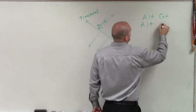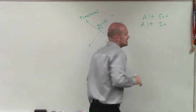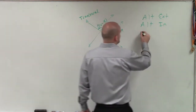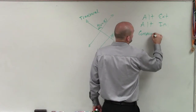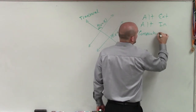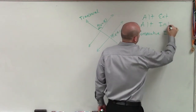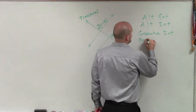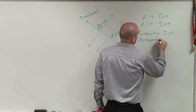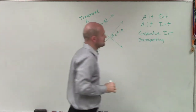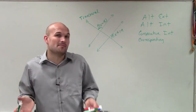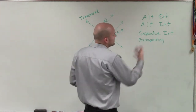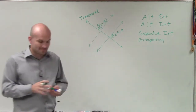If we have alternate interior angles that are equal in measure, then we'll have parallel lines. If we have consecutive or same side interior angles where the sum is supplementary, then we know we'll have parallel lines. Or if we have corresponding angles that are equal in measure, then we'll have parallel lines.